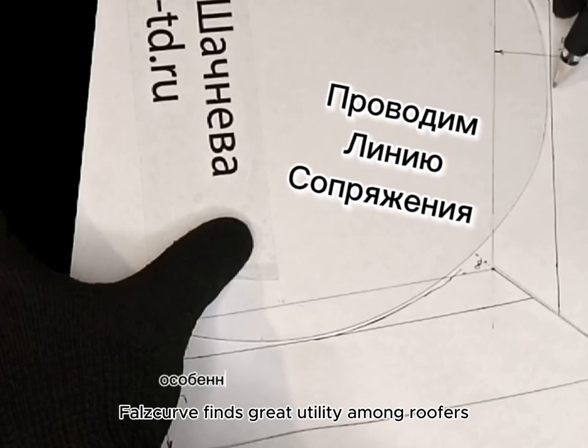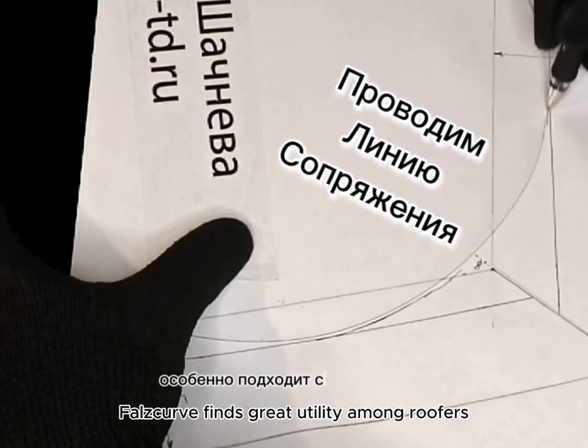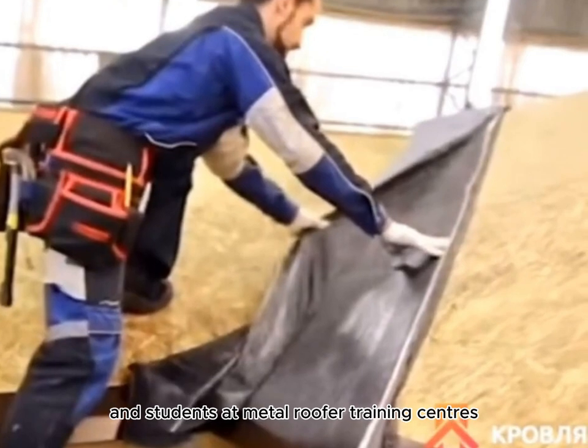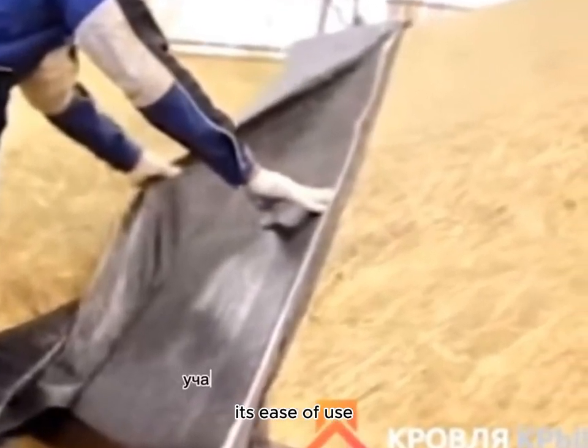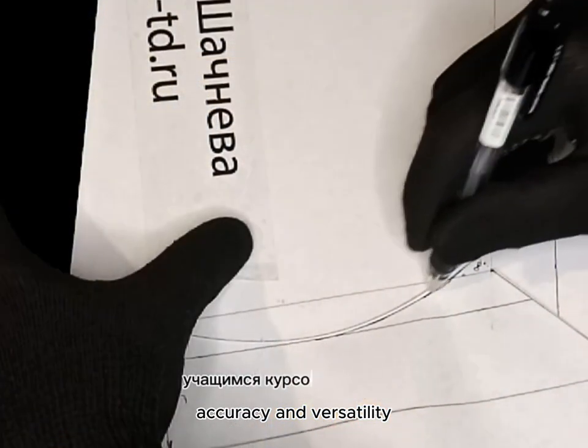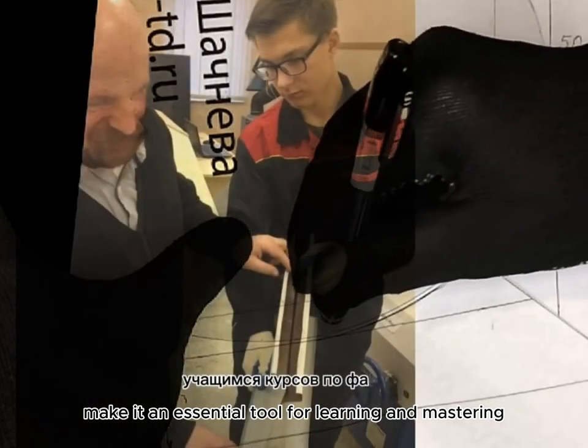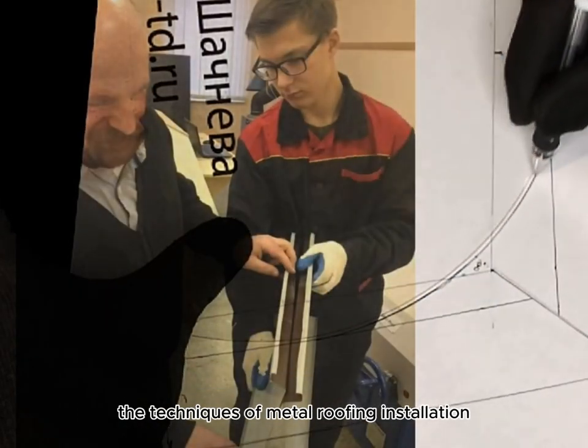Furthermore, Falscurve finds great utility among roofers, apprentices, and students at metal roofer training centers. Its ease of use, accuracy, and versatility make it an essential tool for learning and mastering the techniques of metal roofing installation.